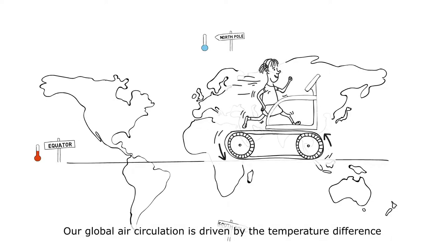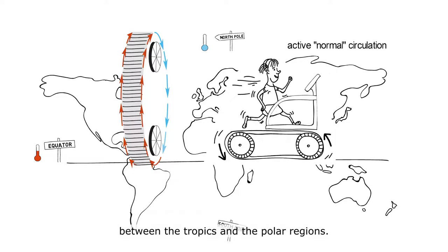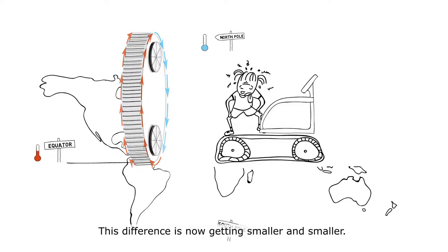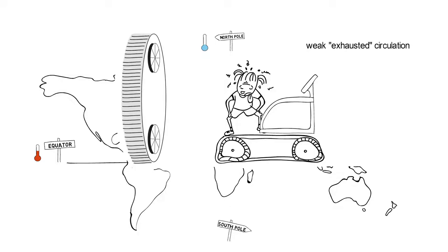Our global air circulation is driven by the temperature difference between the tropics and the polar regions. This difference is now getting smaller and smaller, so the whole circulation is weakening and literally going crazy. There have been three main consequences of this.